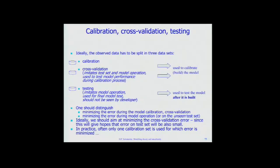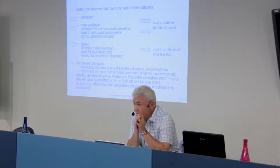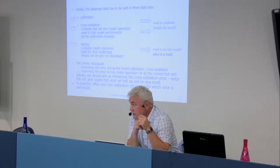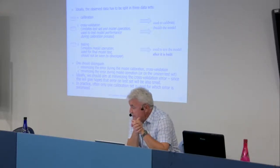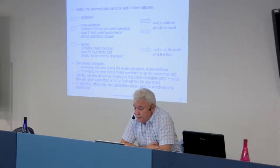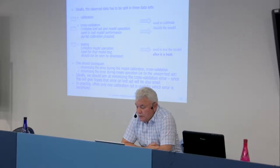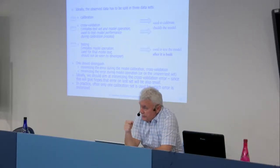Now let's talk about calibration, cross-validation, and testing — a subject not covered well in many places, even in papers by good authors. When we calibrate a model we take a calibration dataset. We also need a separate test set to evaluate the model. This test set cannot be too statistically different from the calibration set — it would be unfair to calibrate on small peaks and then test on large peaks.